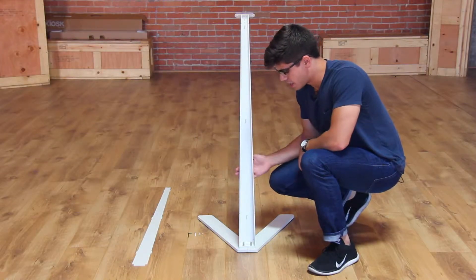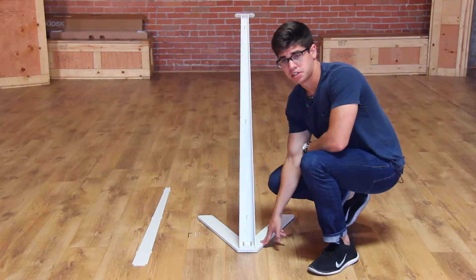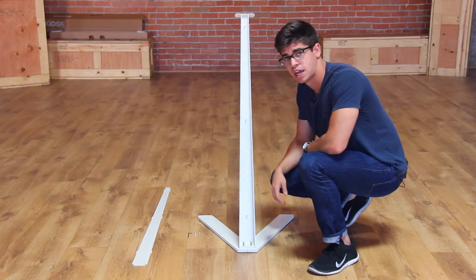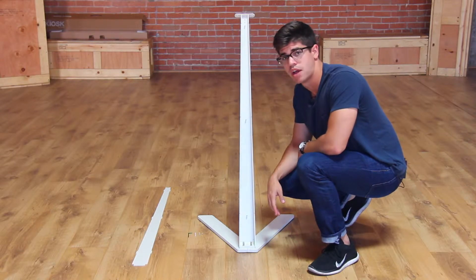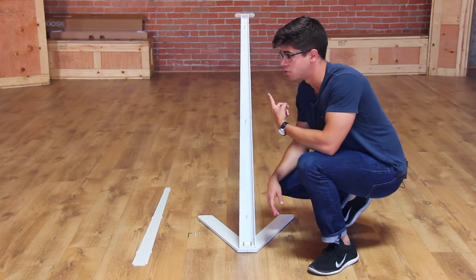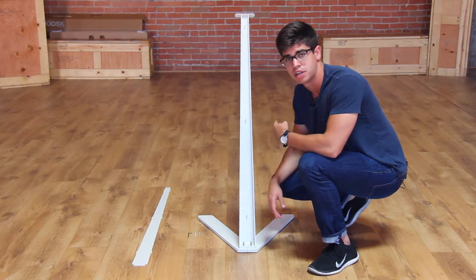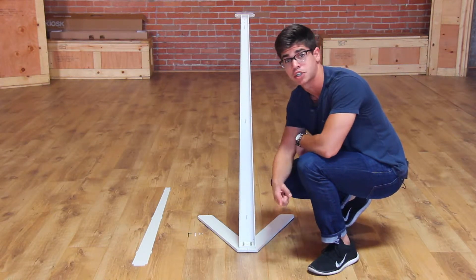So now that we've assembled the neck and the two feet of the kiosk together, we're going to take our neck back plate that we disassembled originally and reinstall it. Before we do so, if you have a power cord that you want to use to power your tablet while it's in use, now is the time to install the power cord and an extension cord as well.